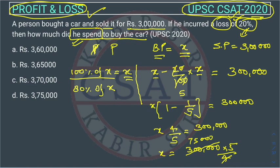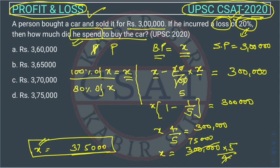So the value of x comes out to 3 lakhs 75 thousand. This is the buying price — the person bought the car for 3 lakhs 75 thousand and sold it at 3 lakhs, incurring a loss of 20%. The answer is option D. I hope you all understood. If you still have a problem, you can connect with us.